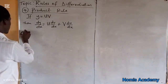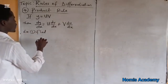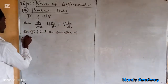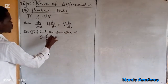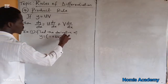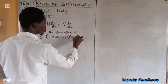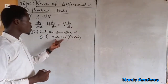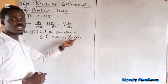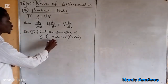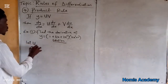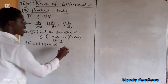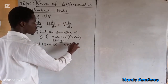Let's pick the first example. Example 1: find the derivative of y equals (1 plus 3x plus 2x squared)(2x squared plus 1). We have two polynomial functions that are products of themselves. So from here, let u equal the first function: 1 plus 3x plus 2x squared, and v equal 2x squared plus 1.